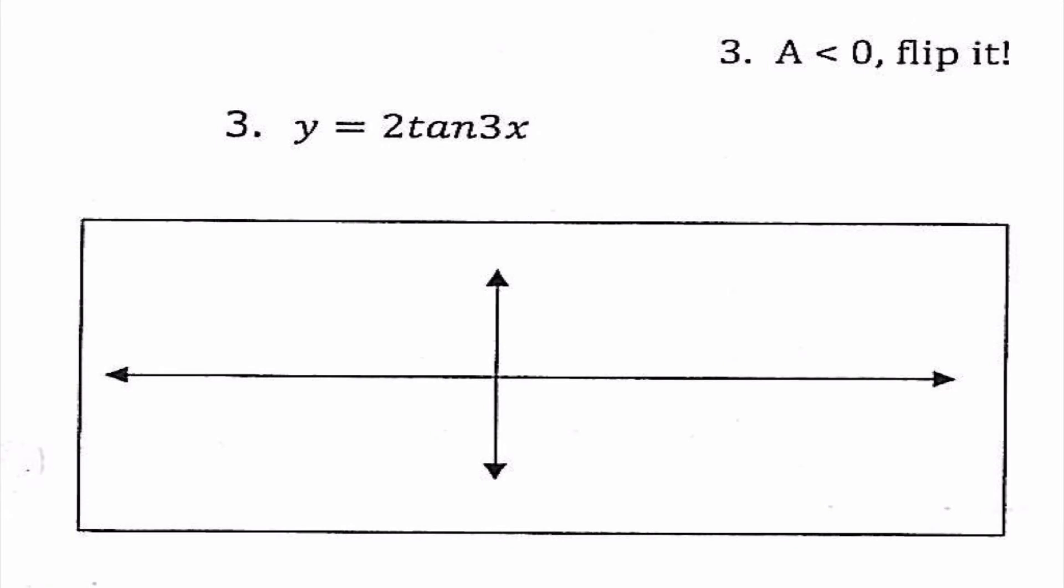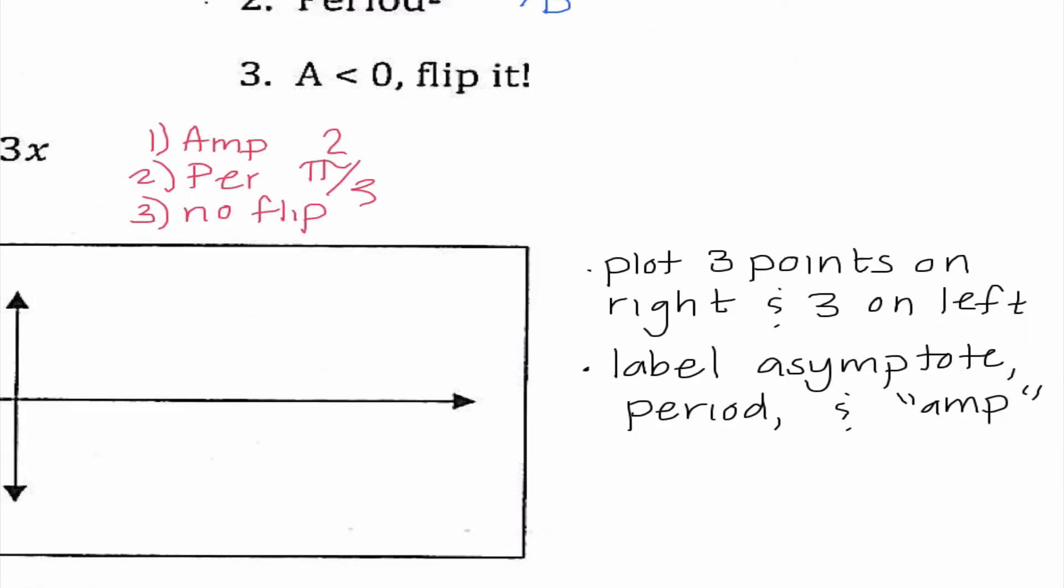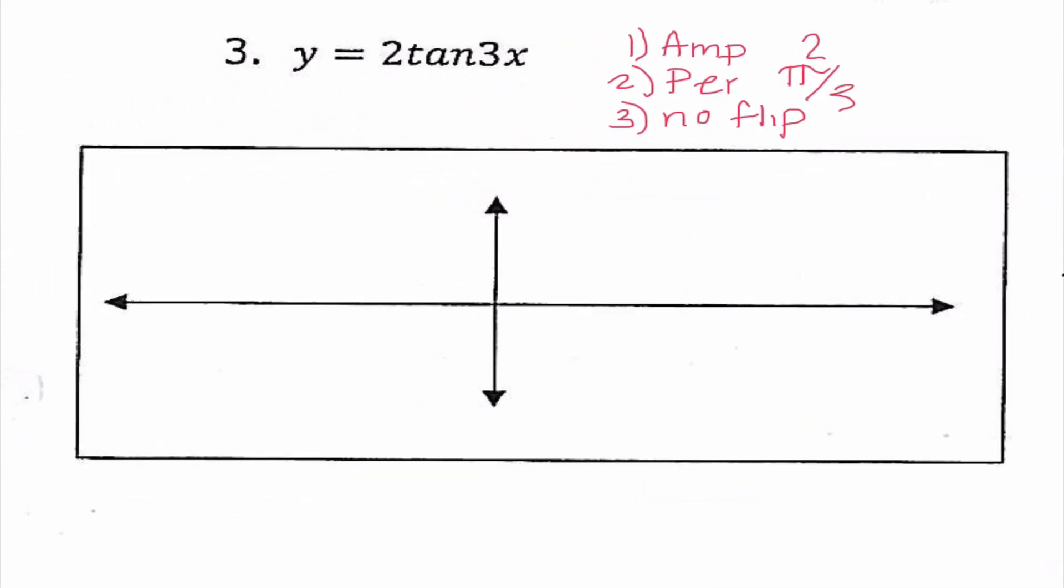So let's look at number 3. So y equals 2 tan of 3x. So my amplitude here is going to be 2. The period is going to be π divided by B, so π over 3. And then lastly, we would say that there is no flip on this one. So when we're graphing these problems, we're going to plot 3 points on the right and 3 points on the left. We need to label the asymptote, the period, and the amplitude. So I'm going to go ahead and plot these 3 points here.